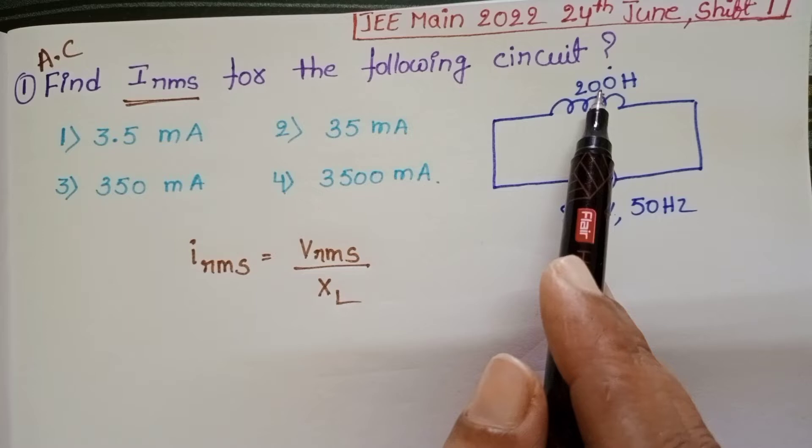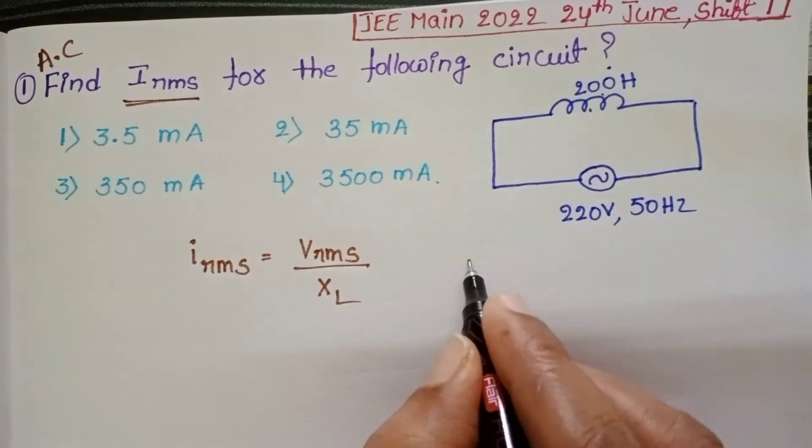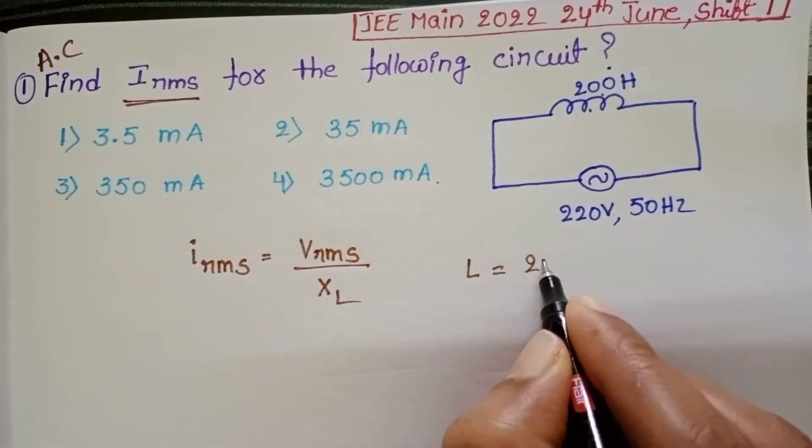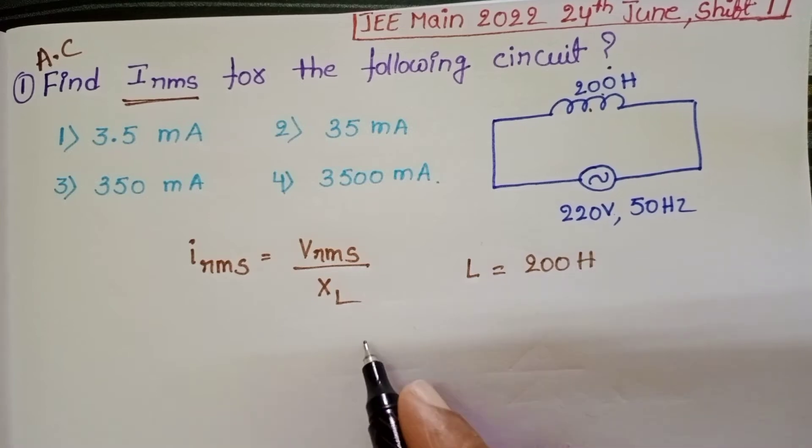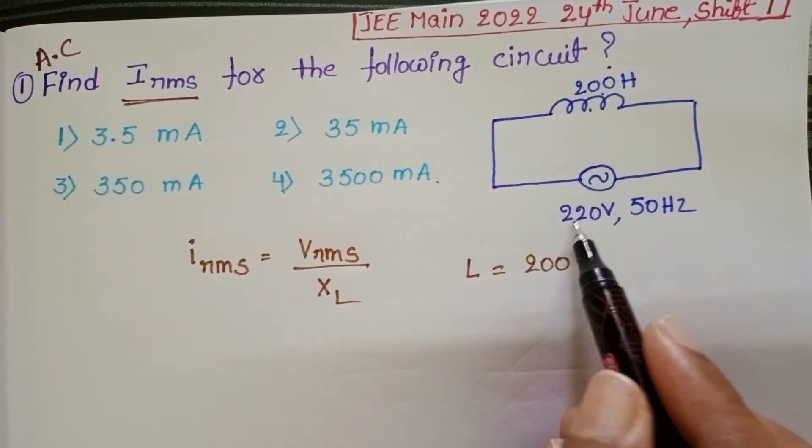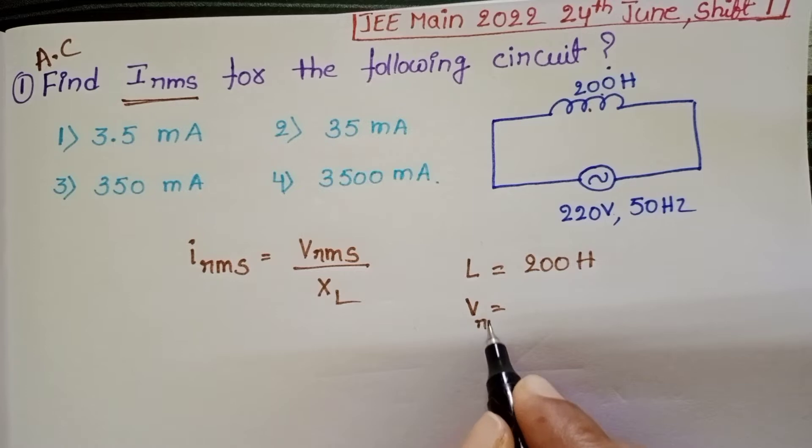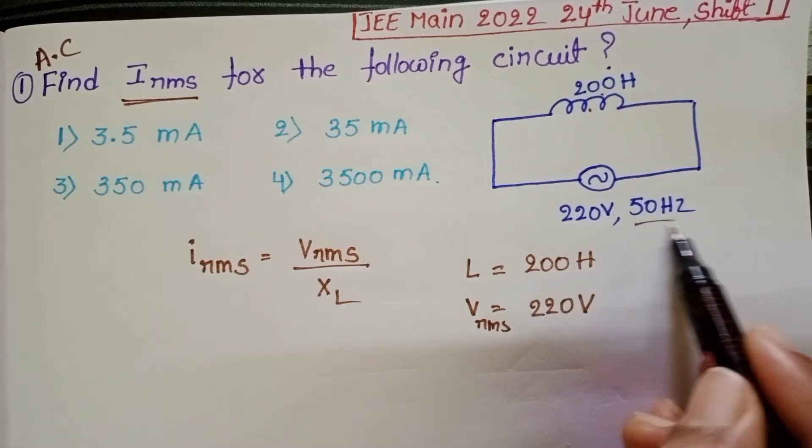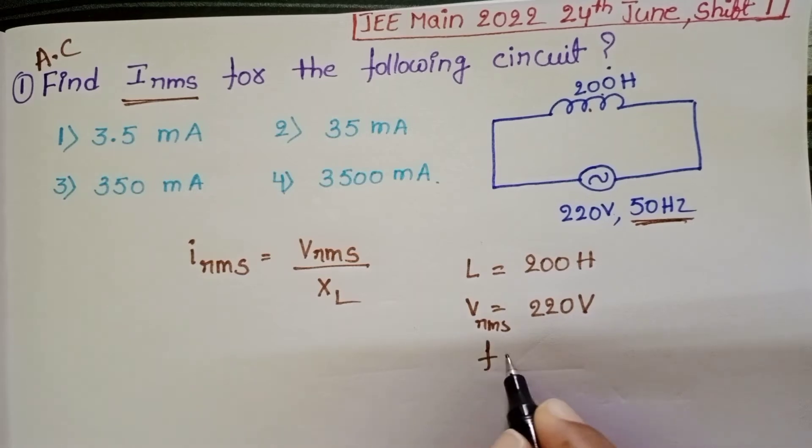From the diagram, inductance of inductor is equals to 200 Henry and VRMS value is 220 volt. And here we know frequency also, 50 Hz.